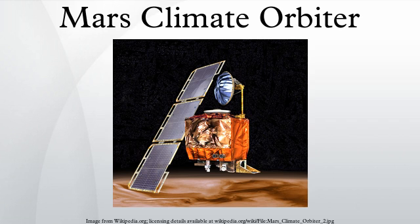The Mars Climate Orbiter was a 338-kilogram robotic space probe launched by NASA on December 11, 1998 to study the Martian climate, atmosphere, and surface changes, and to act as the communications relay in the Mars Surveyor 98 program for Mars Polar Lander. However, on September 23, 1999, communication with the spacecraft was lost as it went into orbital insertion, due to ground-based computer software which produced outputs in non-SI units of pound-seconds instead of the metric units of newton-seconds specified in the contract between NASA and Lockheed. The spacecraft encountered Mars on a trajectory that brought it too close to the planet, causing it to pass through the upper atmosphere and disintegrate.